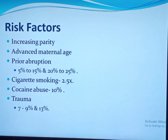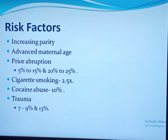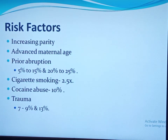Abruption severe enough to cause stillbirth has a recurrence risk estimated at 7 to 11 percent. If severe abruption complicated two prior pregnancies, the risk of recurrence is 15 times higher. Cigarette smoking is another risk factor: a pregnant woman who smokes has a 2.5-fold increased risk of abruption severe enough to cause fetal death, with a dose-response relationship. The risk of fetal death due to placental abruption increases by 40 percent with each pack of cigarettes smoked.